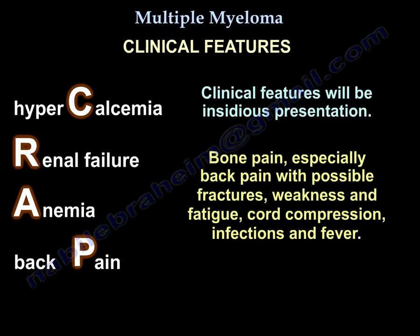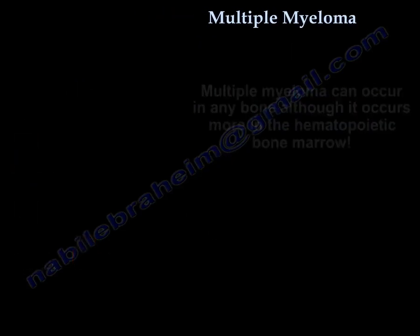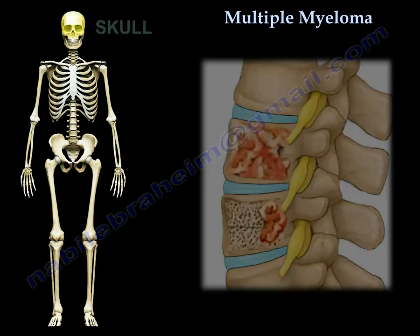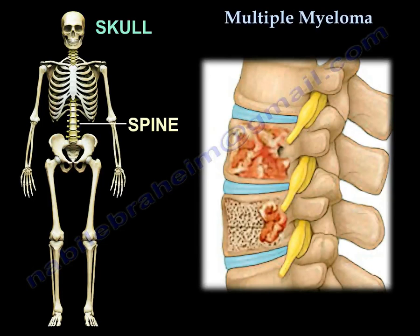The clinical features will be insidious in presentation. You have bone pain, especially back pain, and you may get fractures, weakness and fatigue, cord compression, infections, and fever. Multiple myeloma can occur in any bone, but more commonly in the hematopoietic marrow. It can occur in the skull, spine, and long bones.